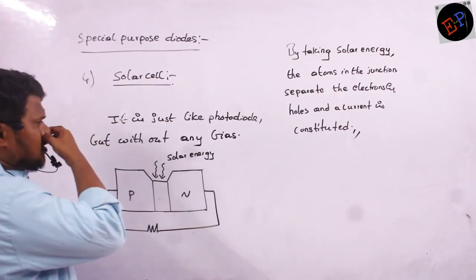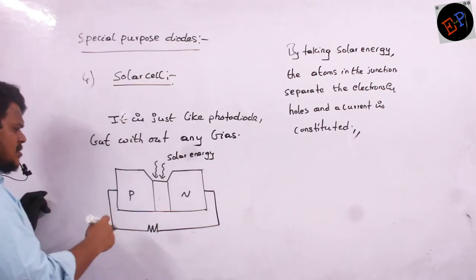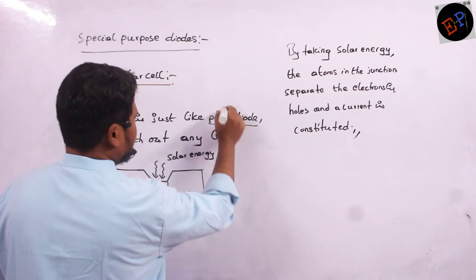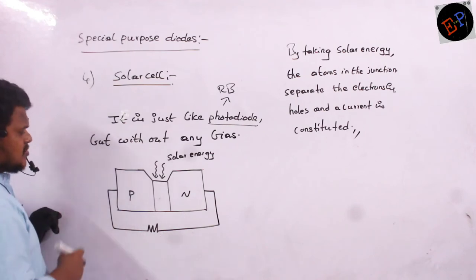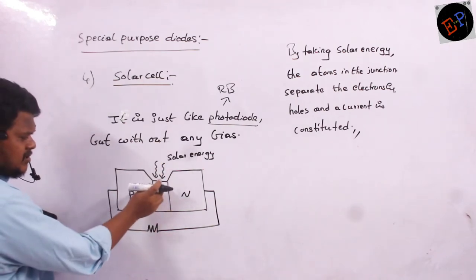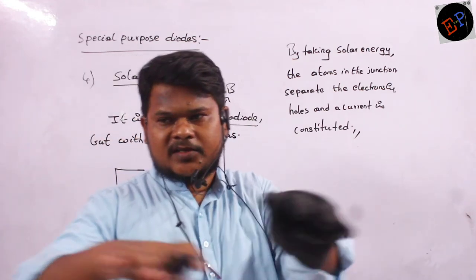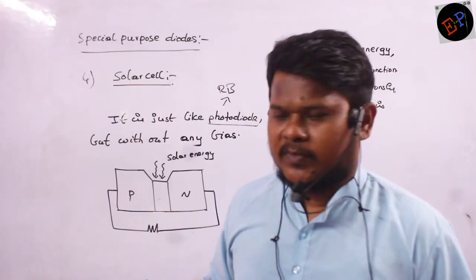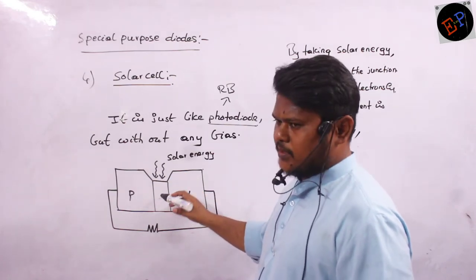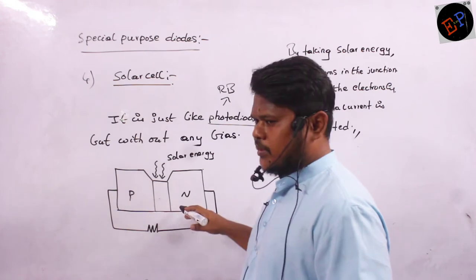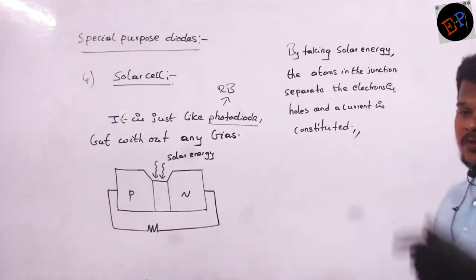Next we study solar cells. A solar cell uses the same concept as a photodiode, but there is no biasing — no battery connection. The junction is made very large so maximum junction area is exposed to light. When light falls on the junction, atoms separate into electrons and holes, and current flows into the load. That is the functioning of a solar cell.